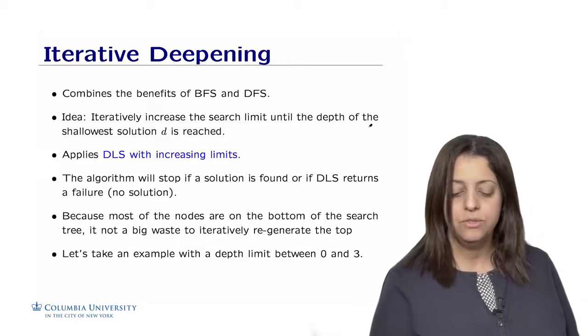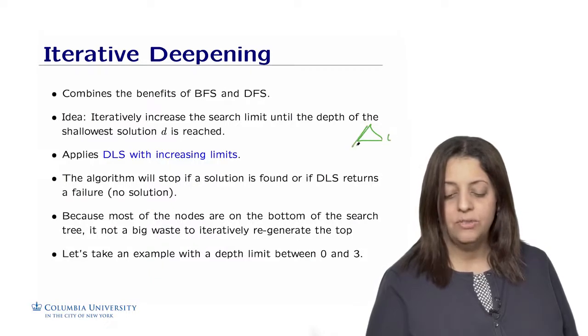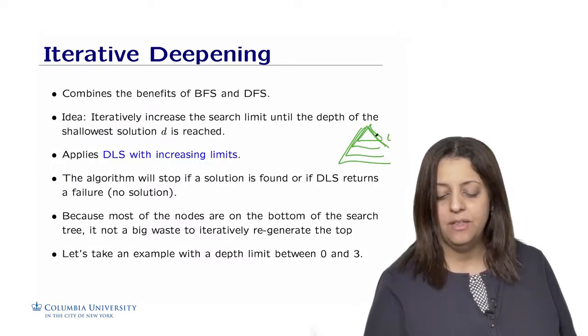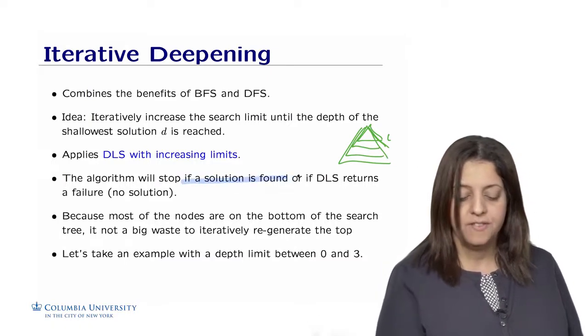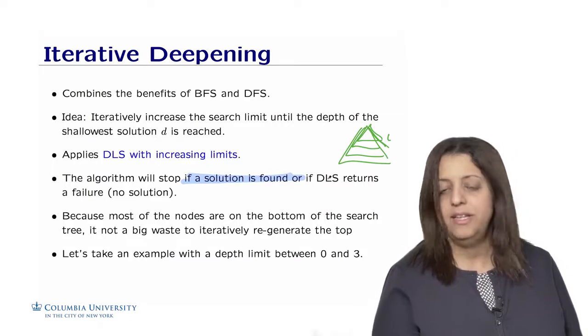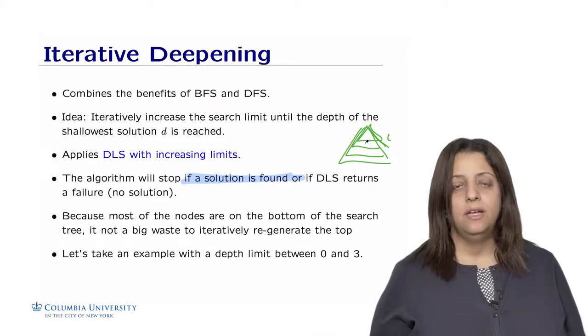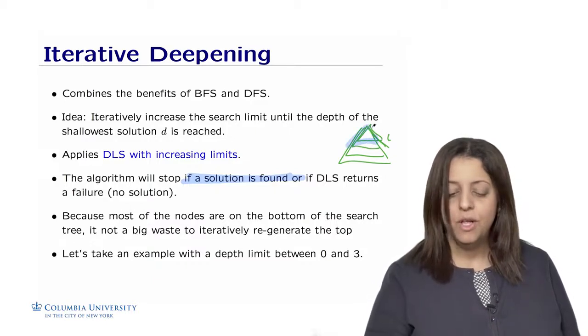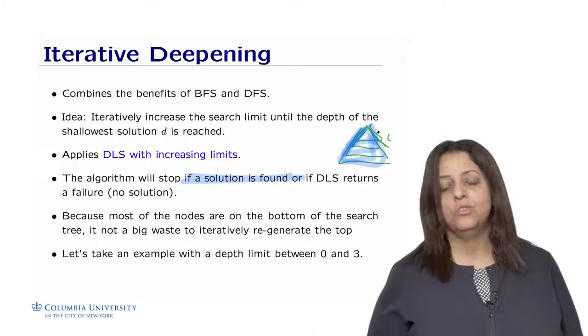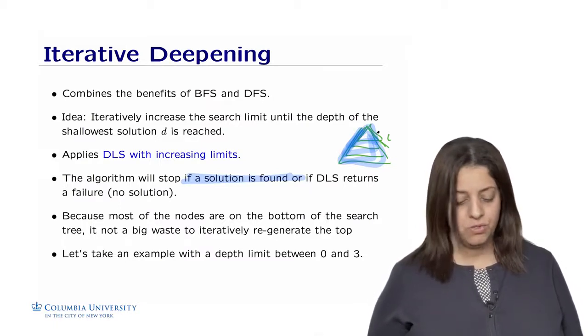In the case of iterative deepening, we're going to do a depth-first search until L, and then we're going to extend L, and then extend L again until we either find a solution. We stop if a solution is found, or if the algorithm DLS within the limit L returns a failure. Because most of the nodes are at the bottom of the search tree, it's actually not a big waste to redo the whole thing. Empirically, we see that it's not a big waste of resources to do that.